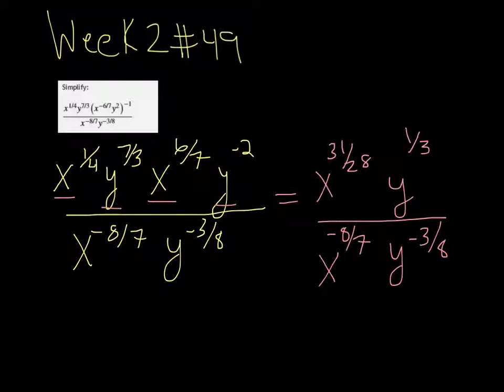So we need to do 31/28 minus a negative 8/7. And that gives us x to the 9/4.